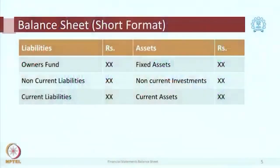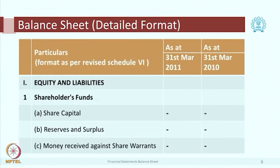Those of you who have seen the balance sheet for the first time — this was the short format to understand it at a glance. On one side we have assets, which list all the resources of the enterprise. On the other side we have liabilities — providers of those resources — including owners who provide owners' funds and external parties like banks who provide external liabilities. Both are listed under liabilities. After this we started discussion on the format as per Schedule 6.